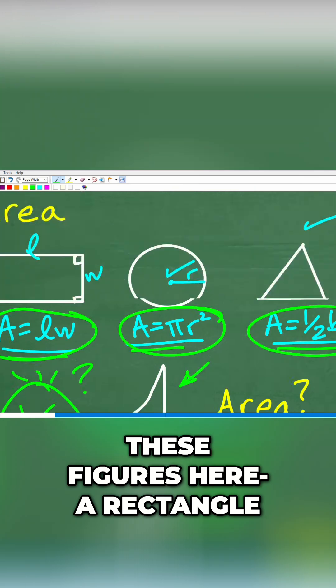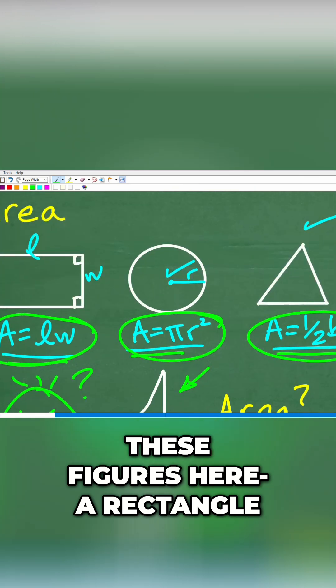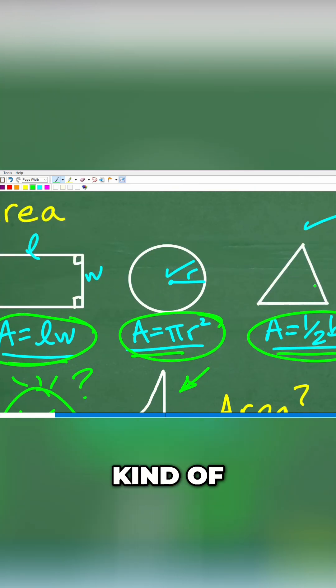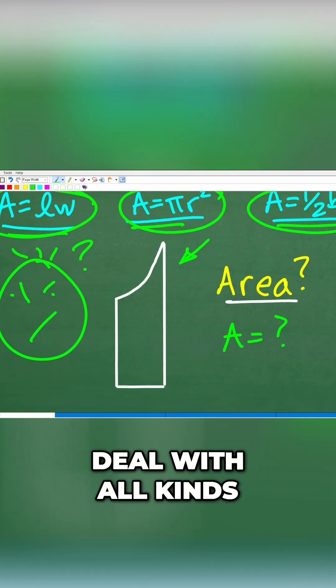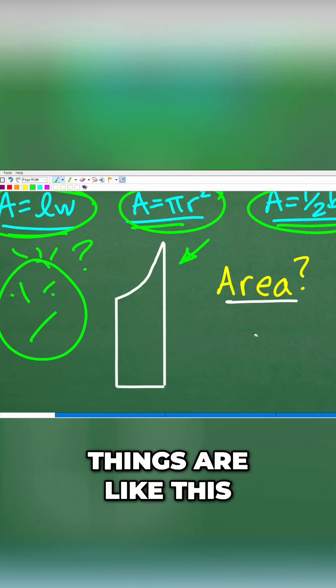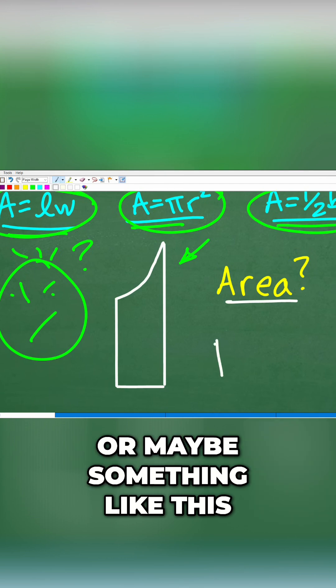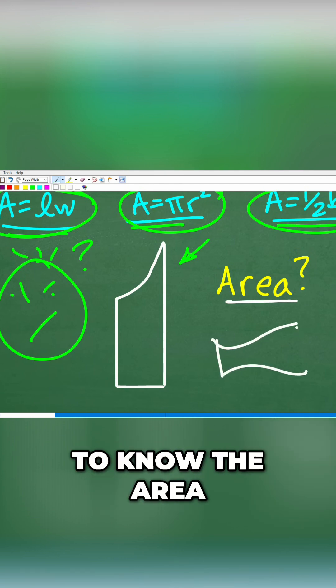Now, if you take a look at these figures here, a rectangle, a circle, a triangle, these are nice basic figures, right? But in real life, we deal with all kinds of crazy shapes. Things like this, or maybe something like this, right? That we'd want to know the area of.